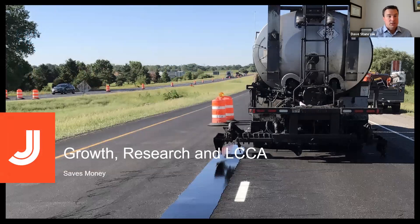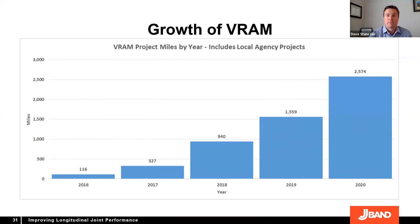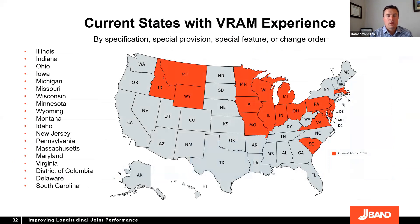The product has been growing rapidly. When J-Band was first commercially sold in 2016, approximately 116 miles of paved roadways used VRAM. By 2020, over 2,500 miles were paved with VRAM, and even more are anticipated this year. VRAM is expanding into more and more states — 18 states plus Washington DC have already used VRAM on some projects.